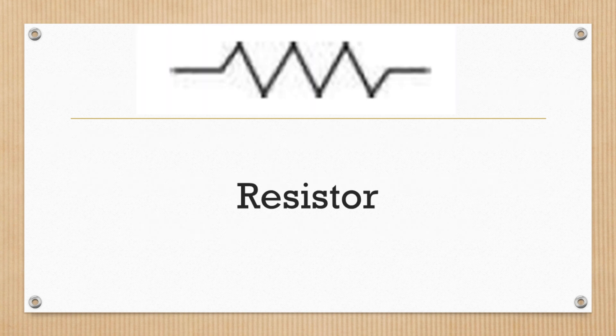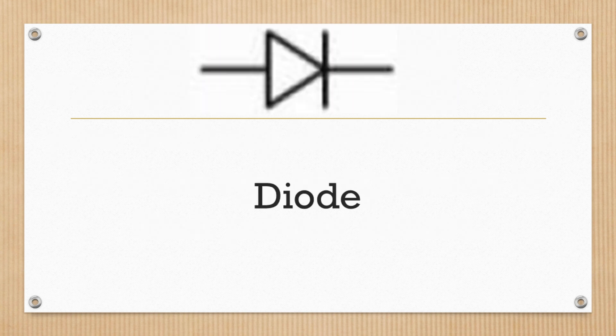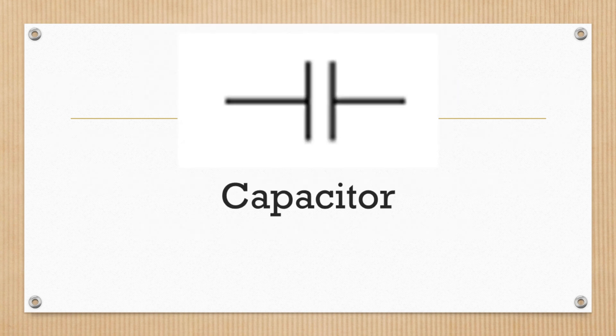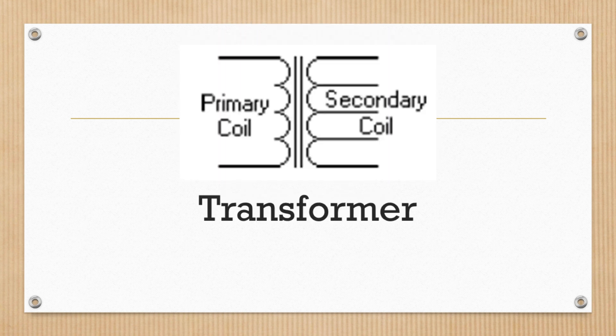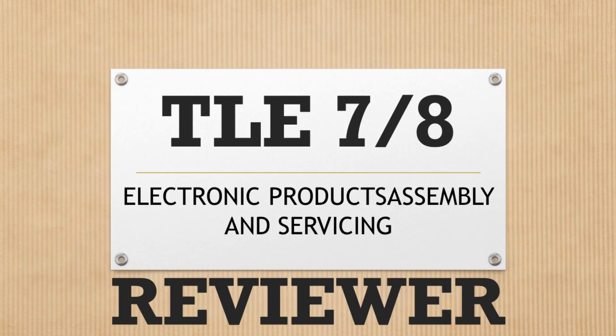This illustration is a resistor. This illustration is a diode. This illustration is a capacitor. This illustration is a transistor. This illustration is a transformer. That's it for today's video.